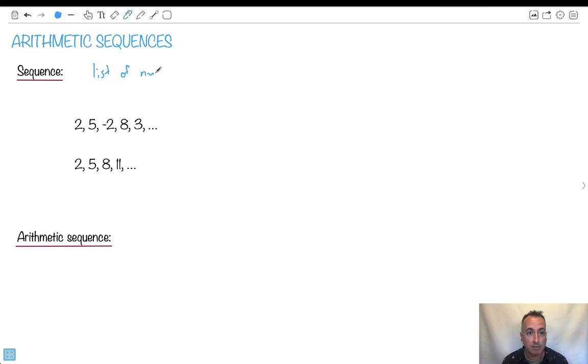Now that list of numbers might have a pattern, maybe it doesn't. It all depends. So a sequence is a very generic thing, just a list.